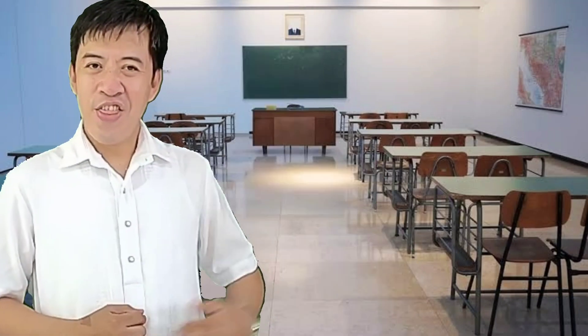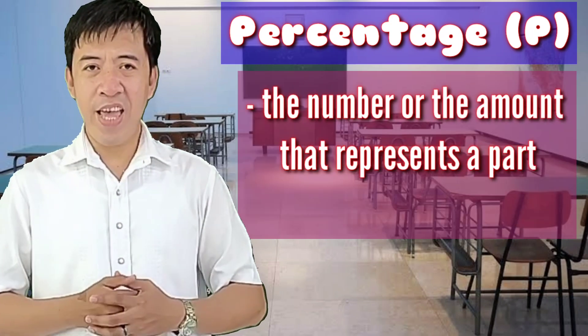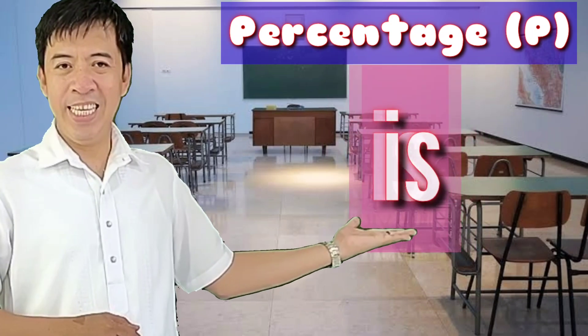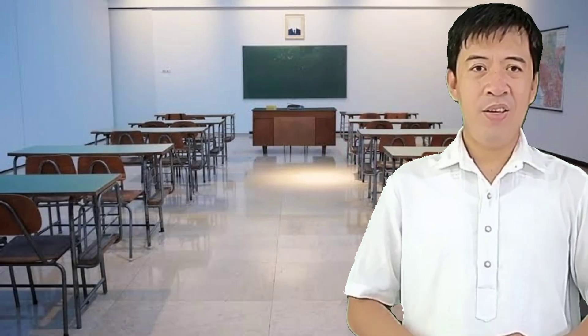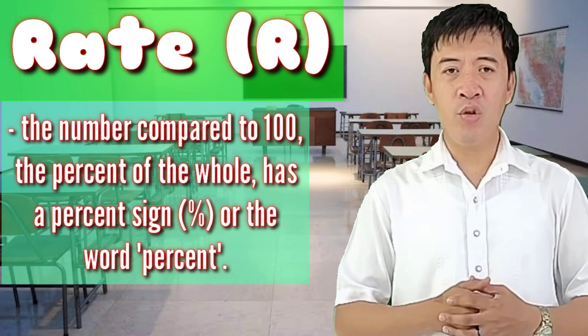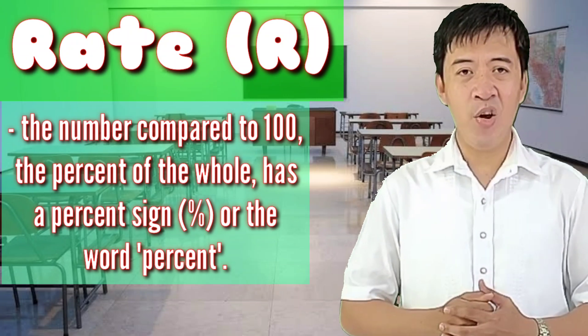What is percentage? What is rate? And what is base? These are the questions we are going to answer today. First is the percentage — we have the symbol P. Percentage is the number or the amount that represents a part of a whole. It is usually followed by the word 'is.' Second, rate — we have the symbol R. Rate is the number compared to 100, the percent of the whole, and it has a percent sign.